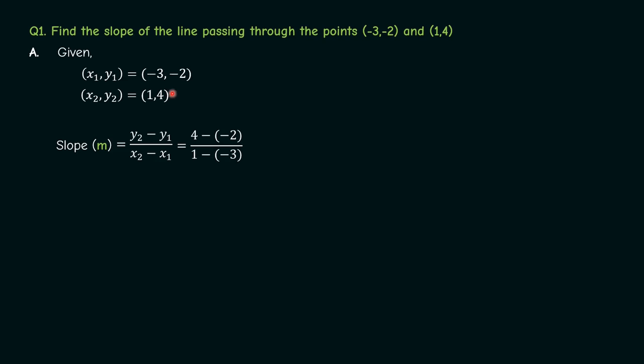So we get (y₂ - y₁) which is 4 - (-2) divided by (x₂ - x₁) which is equal to 1 - (-3). Simplifying this we get m = 1.5. Therefore the slope of the line is 1.5.